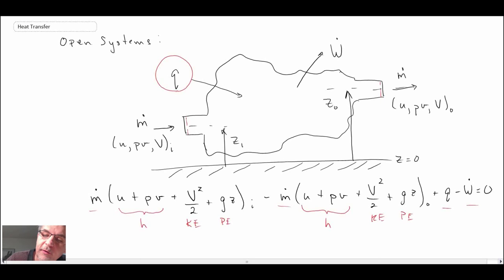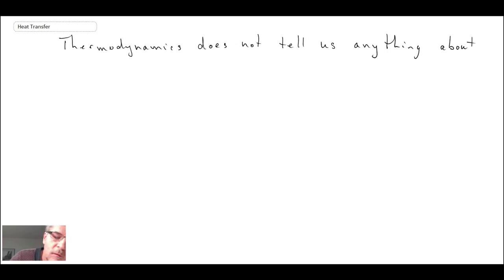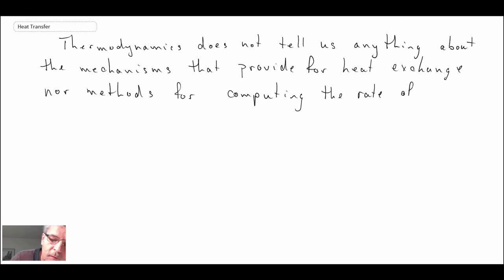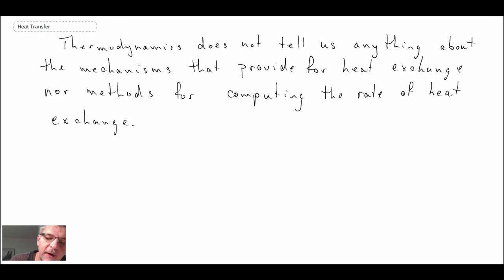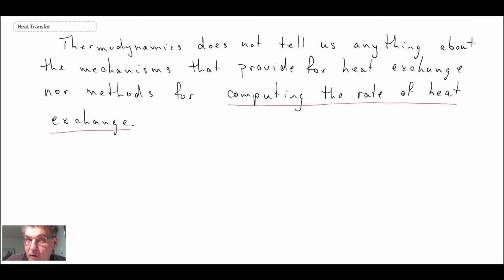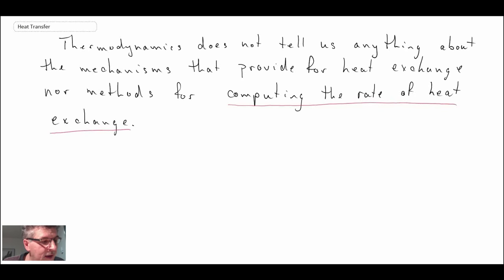When studying thermodynamics, heat transfer is quite often given. Thermodynamics tells us nothing about the mechanisms by which heat exchange takes place, nor does it provide methods for computing the rate of heat exchange. Even if you calculate Q for a particular system, you have no method of actually determining heat transfer for given scenarios. That's what we're doing in this course — looking at the mechanisms of heat transfer and estimating its values, which better equips you to analyze systems using thermodynamics or fluid mechanics.